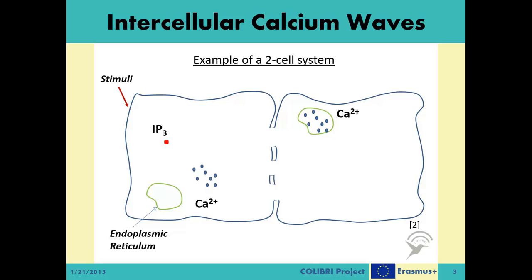While some IP3 molecules are triggering the cell's ER, some other released IP3 molecules diffuse through the gap junctions to the neighboring cell, and trigger the ER of that neighboring cell to release its own calcium ions. In this way, the cell on the left achieves transmitting — or in other words, relaying — the message generated by the external stimuli. In a system with more than two cells, this relaying continues for a certain number of cell hops based on various values like the strength of the initial stimuli.